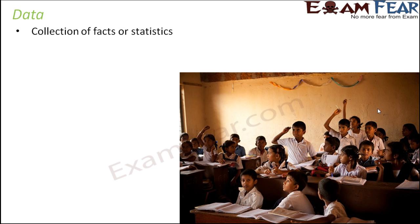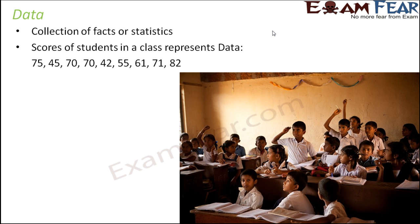Now here in all three examples, data was represented by numbers. Now these facts or statistics could be anything — it could be the scores of students in a class, the number of students present in a class, the amount of money in rupees earned by a shopkeeper during a year, or the amount of fruits bought throughout the year. So it could be any information or any facts that you have.